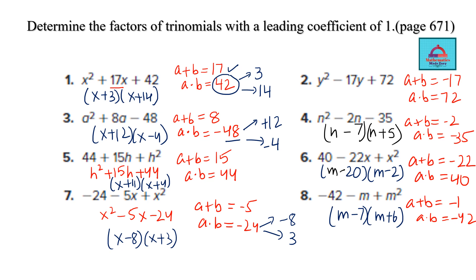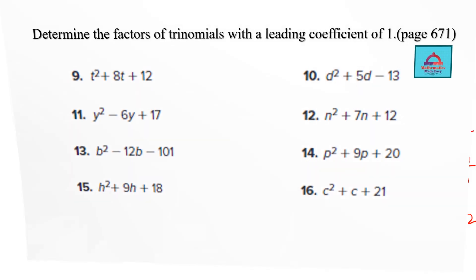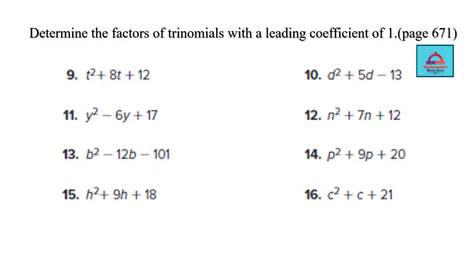For the expression with n, the factors are (n − 7)(n + 5) — verify they work. For the last one, two numbers that multiply to 72 and add to −17 are −9 and −8, giving (y − 9)(y − 8). These complete the factorizations using middle term splitting with leading coefficient 1.